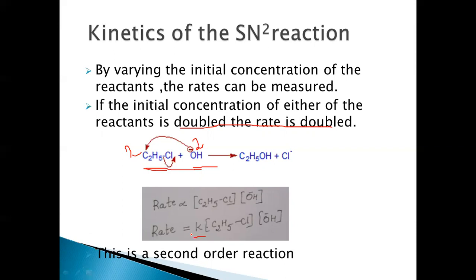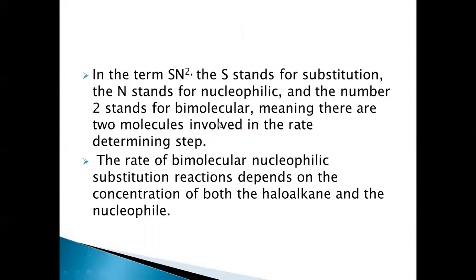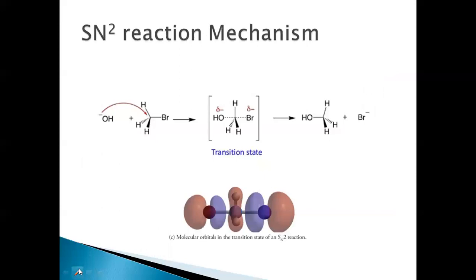Removing the proportionality and introducing the proportionality constant K, the rate equals K times the concentration of ethyl chloride times the concentration of OH minus. This is a second-order reaction — the rate depends on the concentration of both reactants. This gives the name SN2: S for substitution, N for nucleophilic, and 2 for bimolecular, meaning the rate depends on the concentration of both the substrate and the nucleophile.